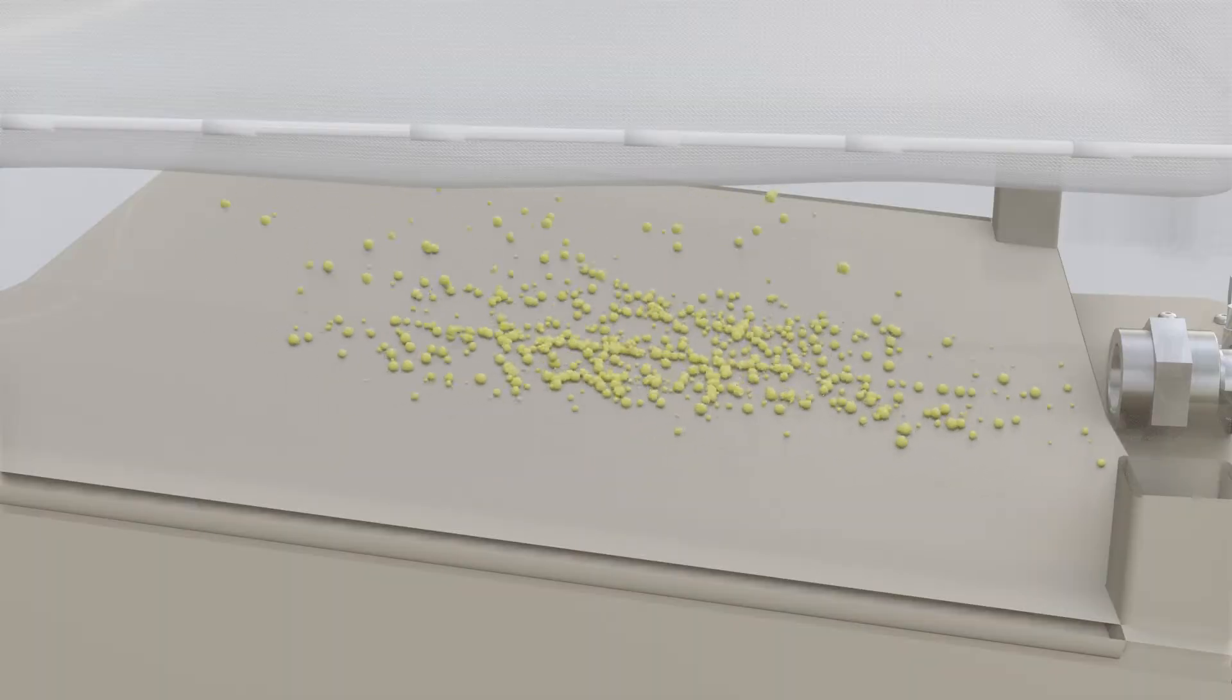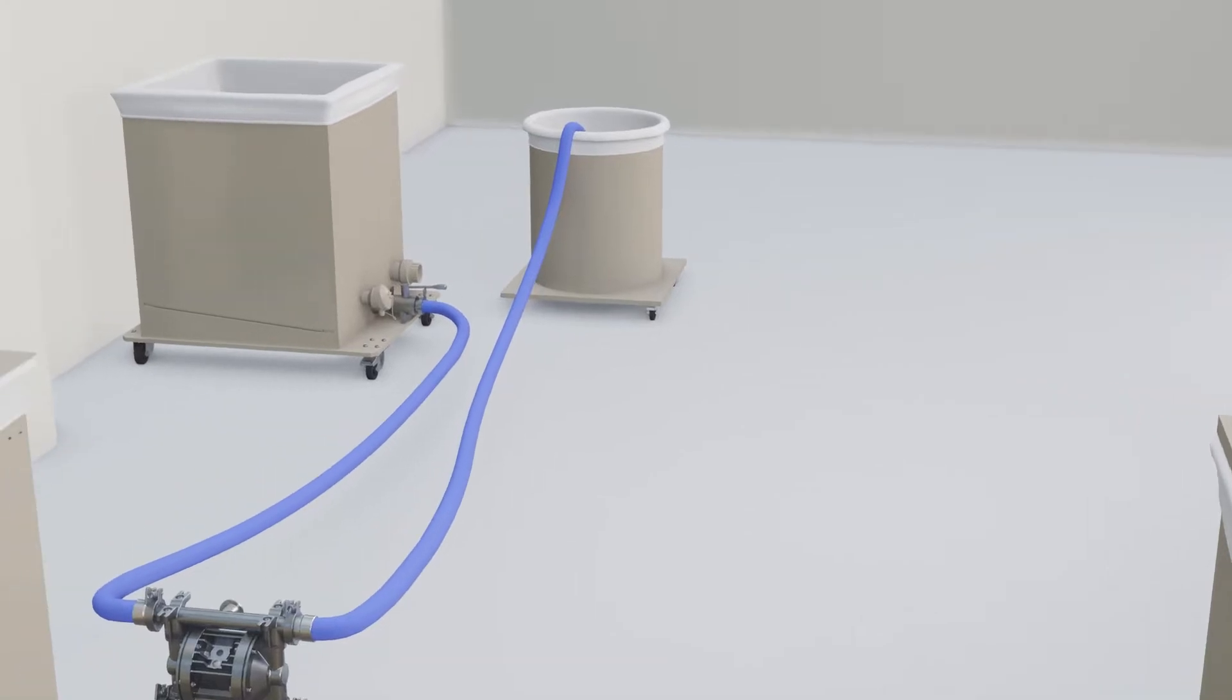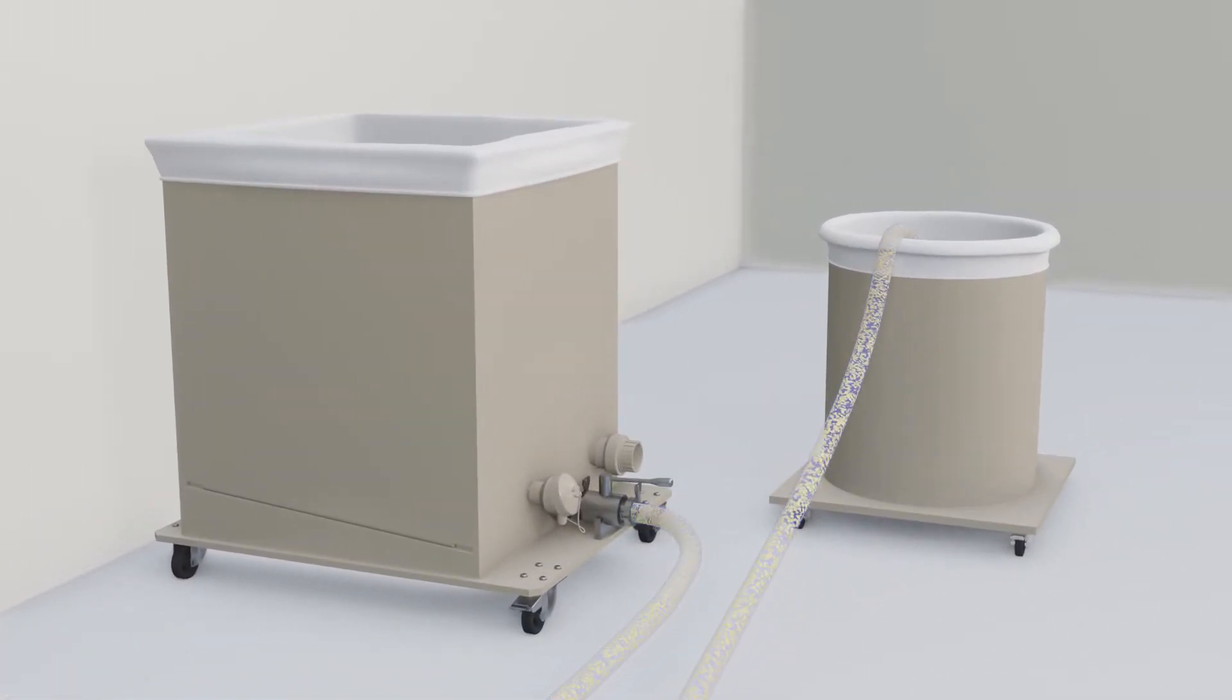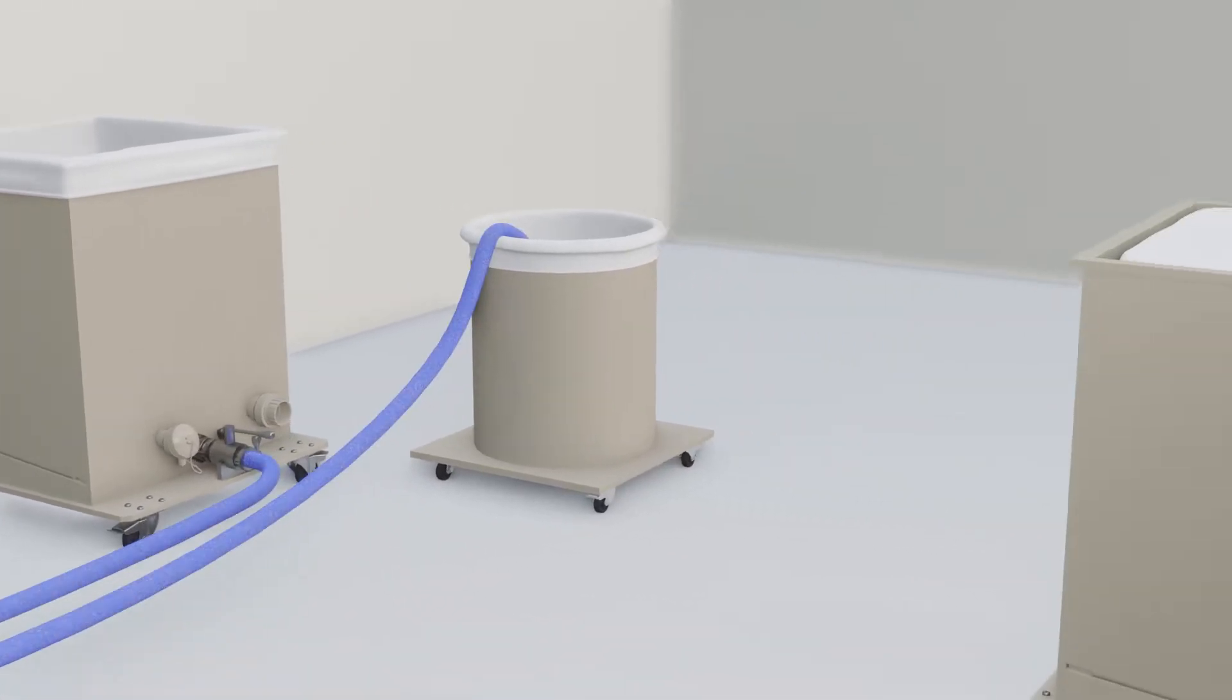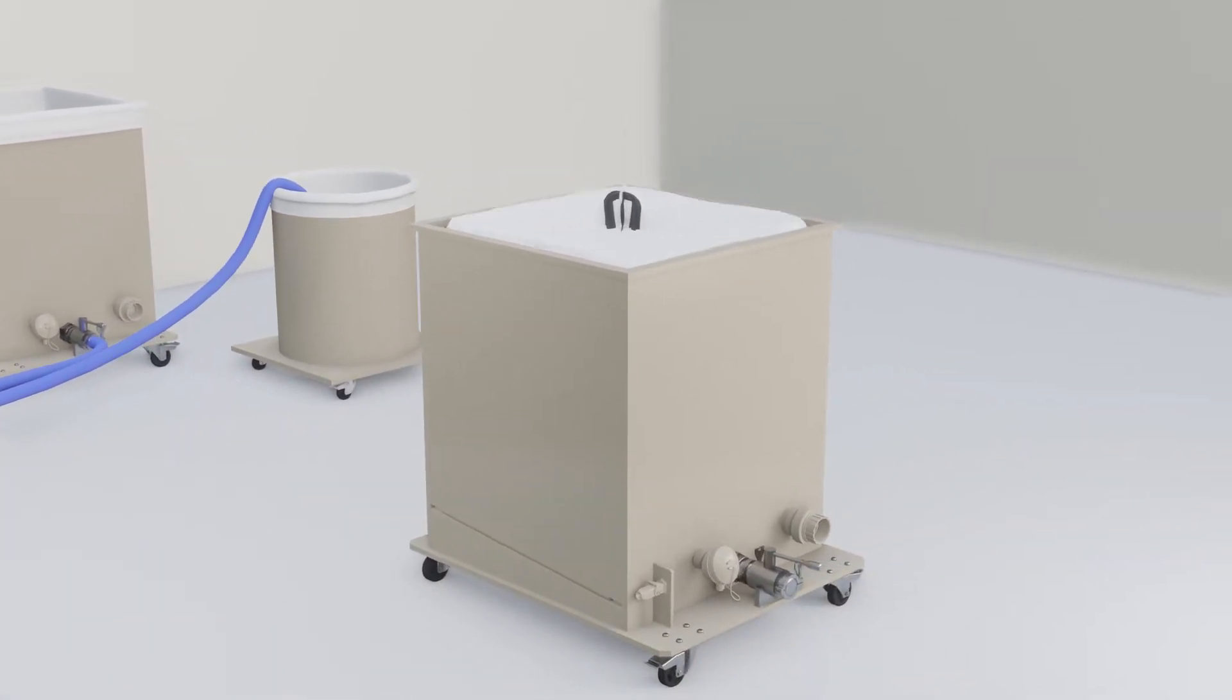As one soaks, another trolley agitates while the rest are being filtered, cleaned or loaded. Using four trolleys, you can process over 500 pounds per 8-hour shift. This is the most efficient configuration to maximize the use of the agitator.